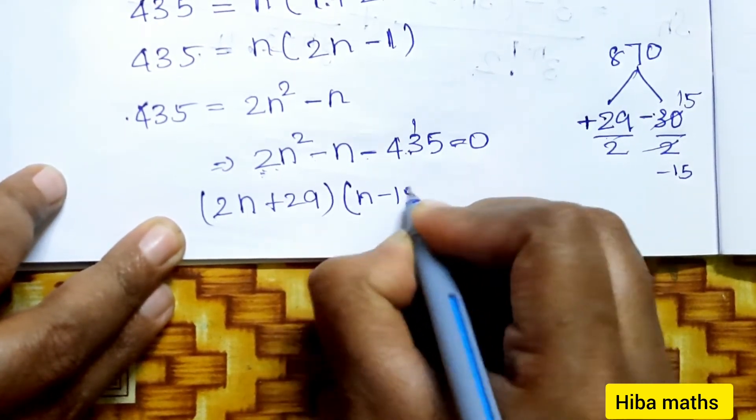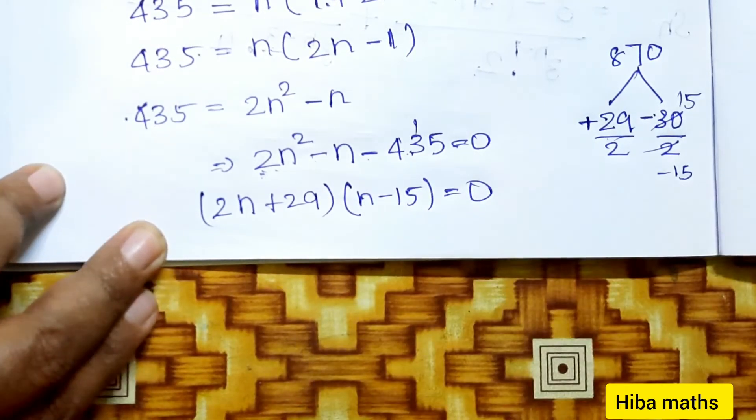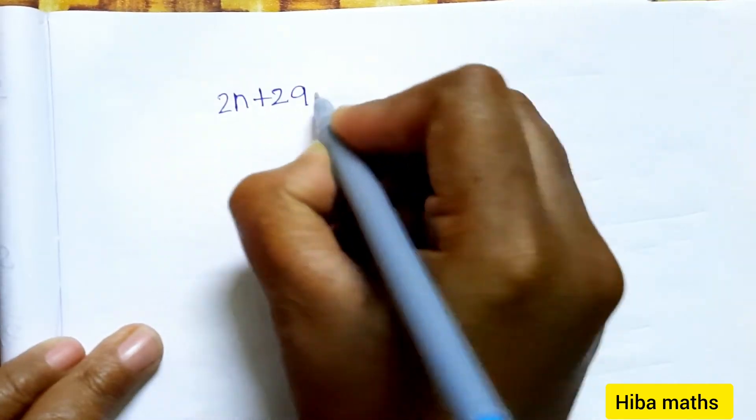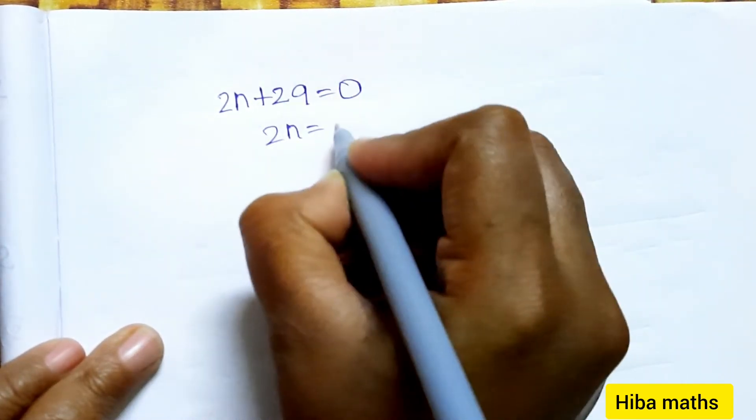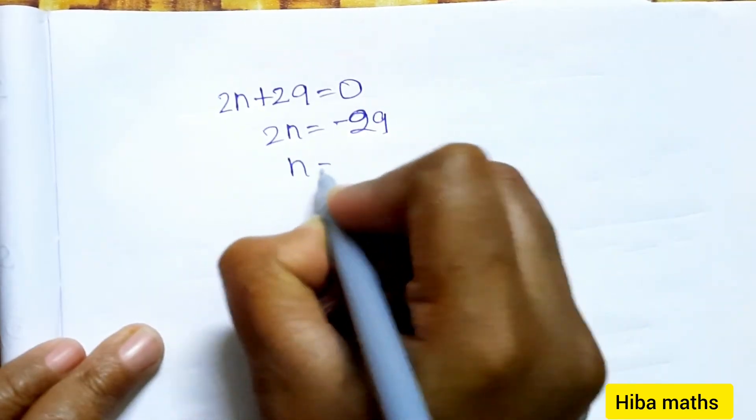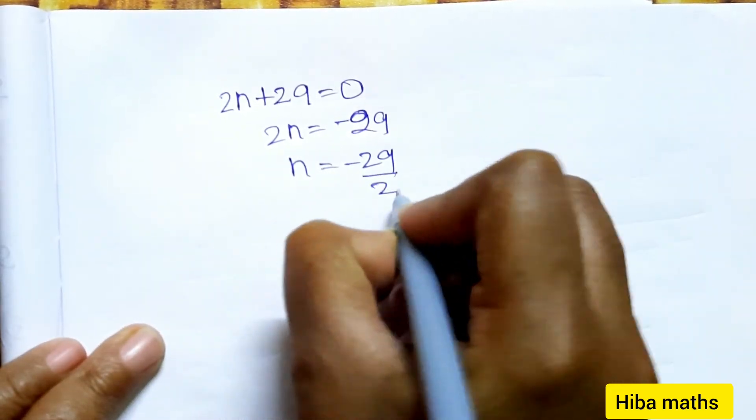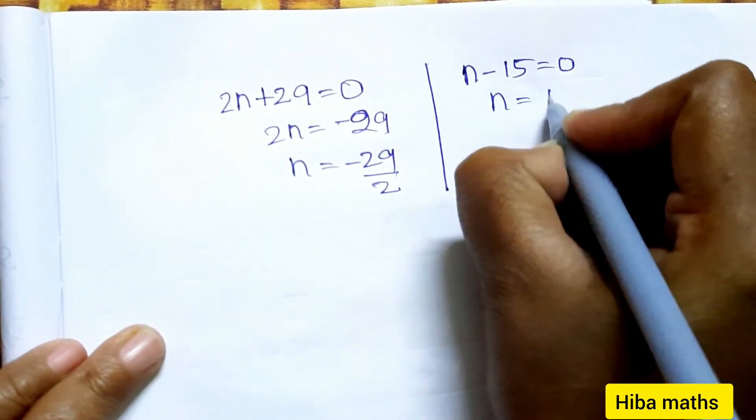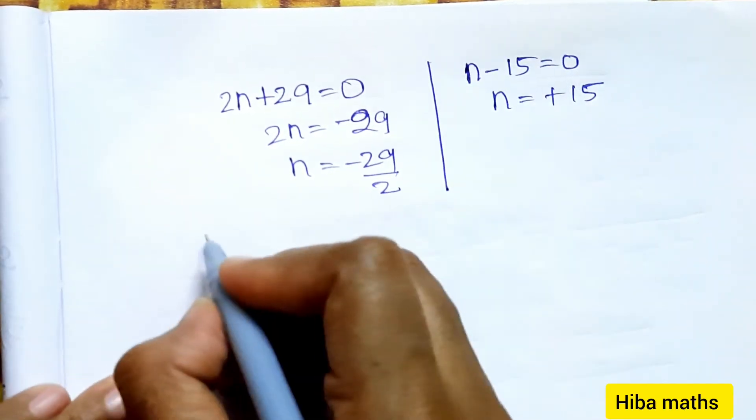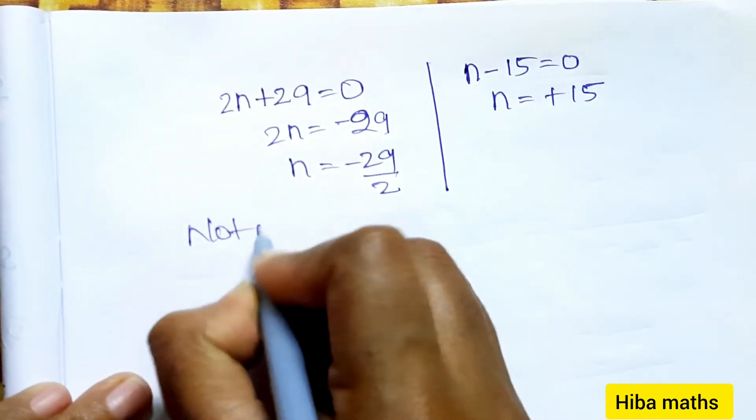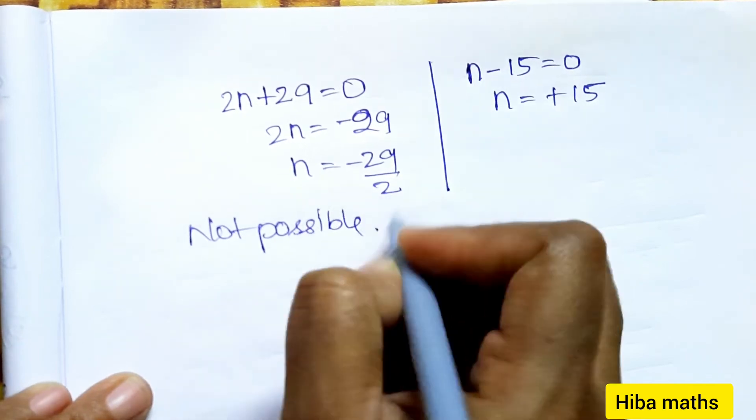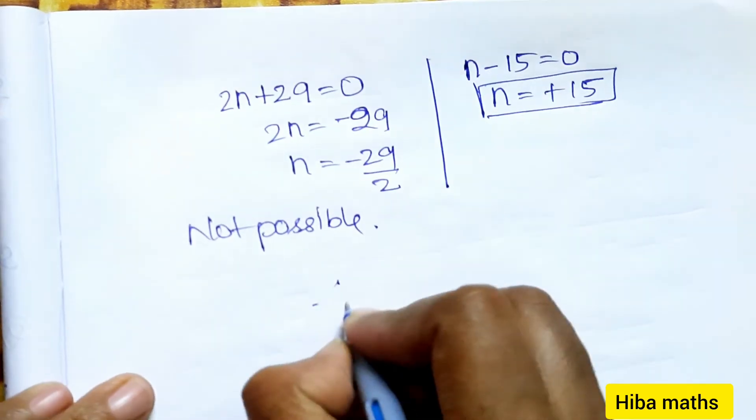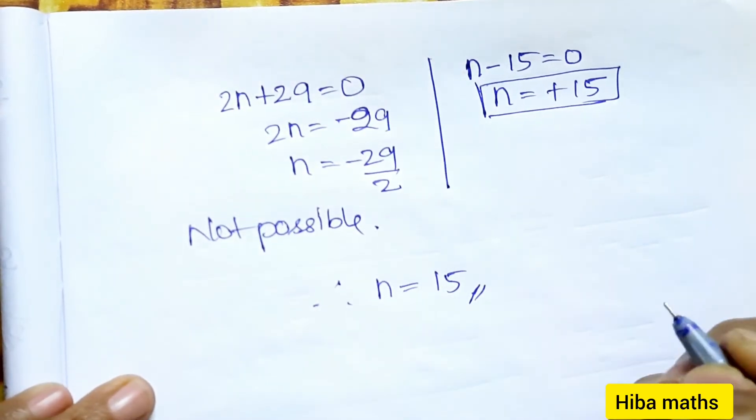Solving: 2n + 29 = 0 gives n = -29/2, and n - 15 = 0 gives n = 15. Negative value is not possible, so we take the positive value. Therefore, n = 15.